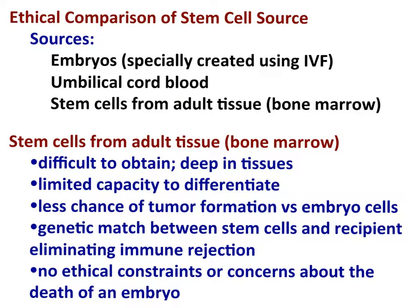Evaluating stem cells from adult tissue: the downside is they are fairly difficult to obtain — located deep in tissues such as bone marrow — and have a limited capacity to differentiate, not as pluripotent as embryonic stem cells. There is less chance of tumor formation, and when stem cells come from the adult's own tissue, the genetic match eliminates immune rejection. There are very few ethical constraints or concerns about the death of an embryo.